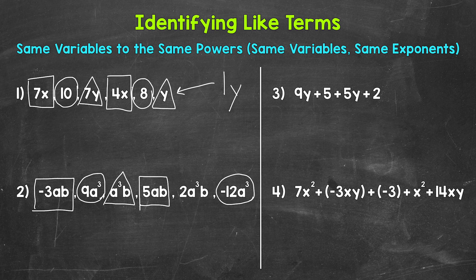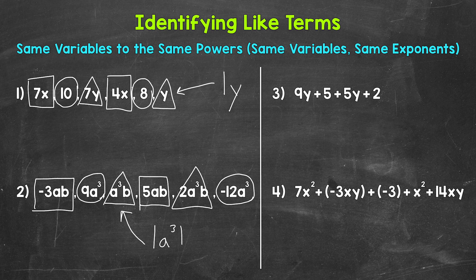Lastly, we have a cubed b — so we have the variable a to the power of 3, and then the variable b which is to the power of 1. The like term is going to be 2a cubed b. For the term a cubed b, since no coefficient is shown, the coefficient is 1, so we can always rewrite it with that coefficient of 1 if preferred.